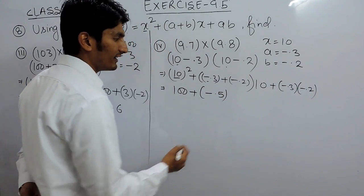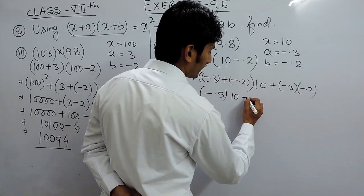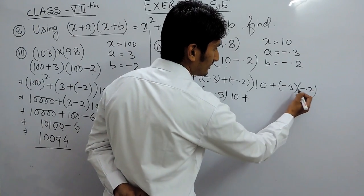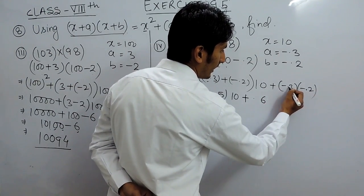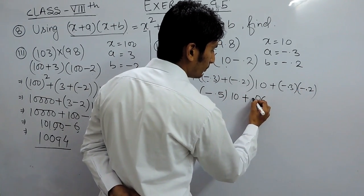This will become minus 0.5 times 10, and minus times minus will become plus. 3 times 2 is 6, and since there are 2 digits after the decimal, this will become 0.06.